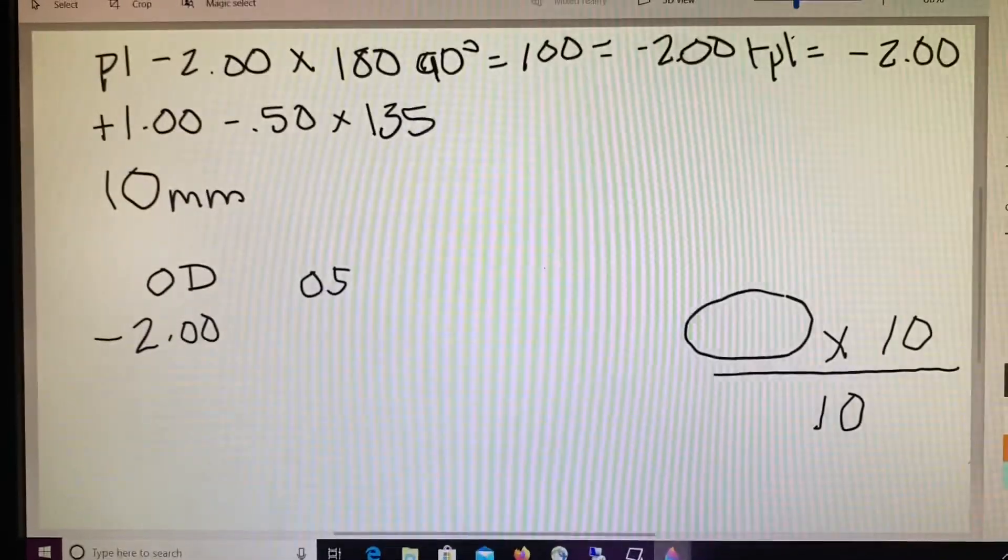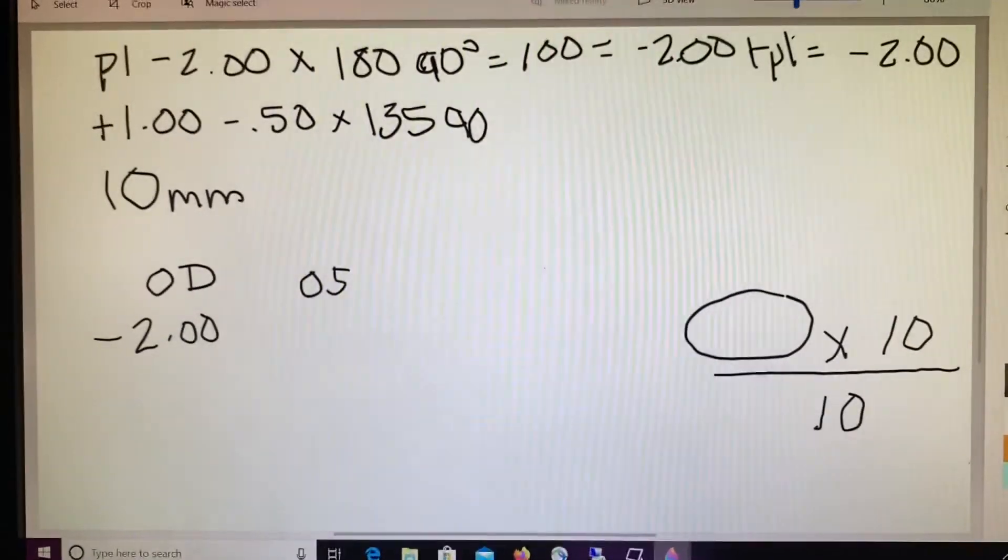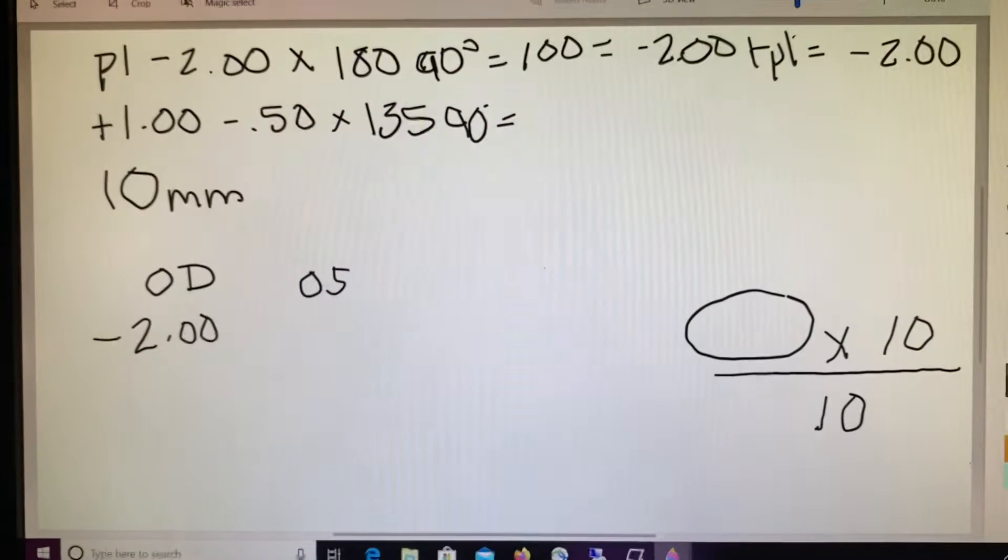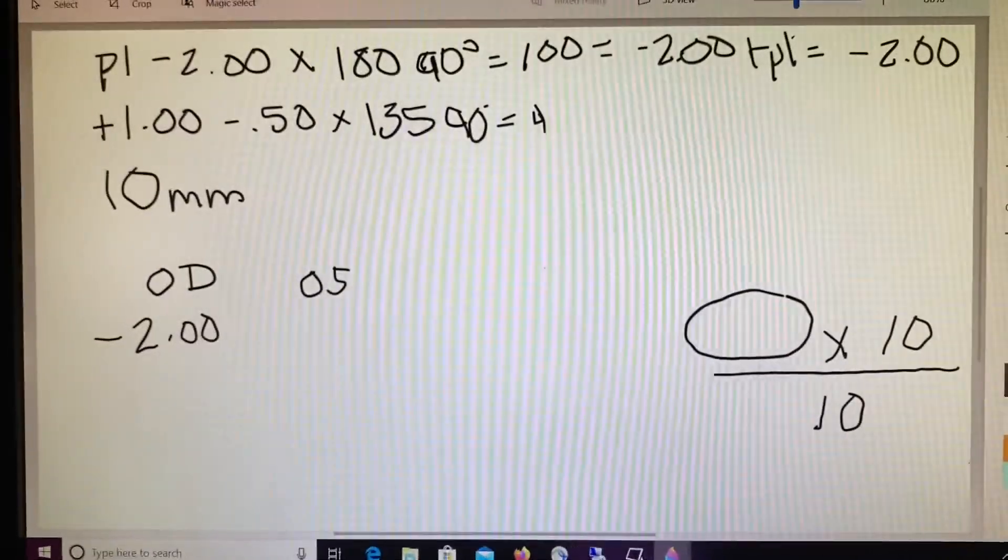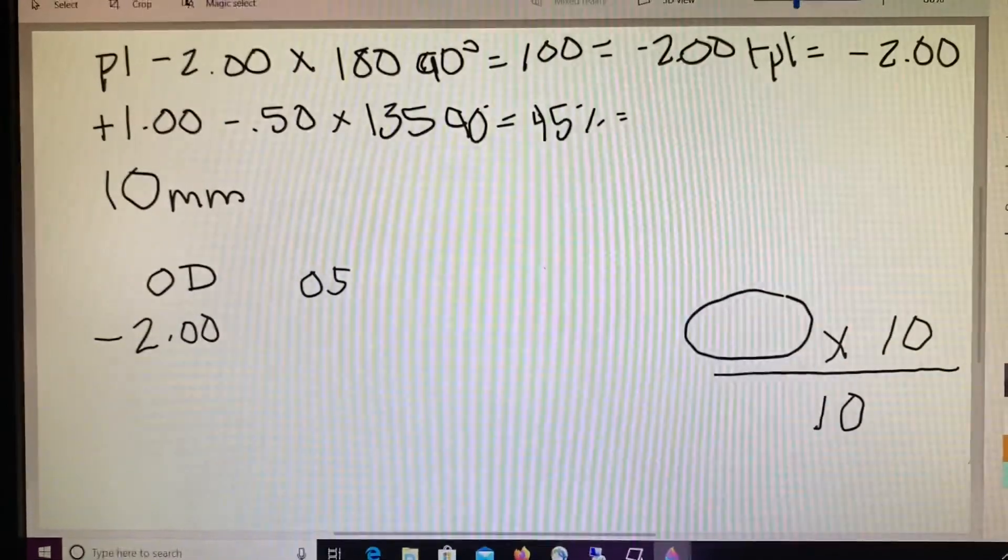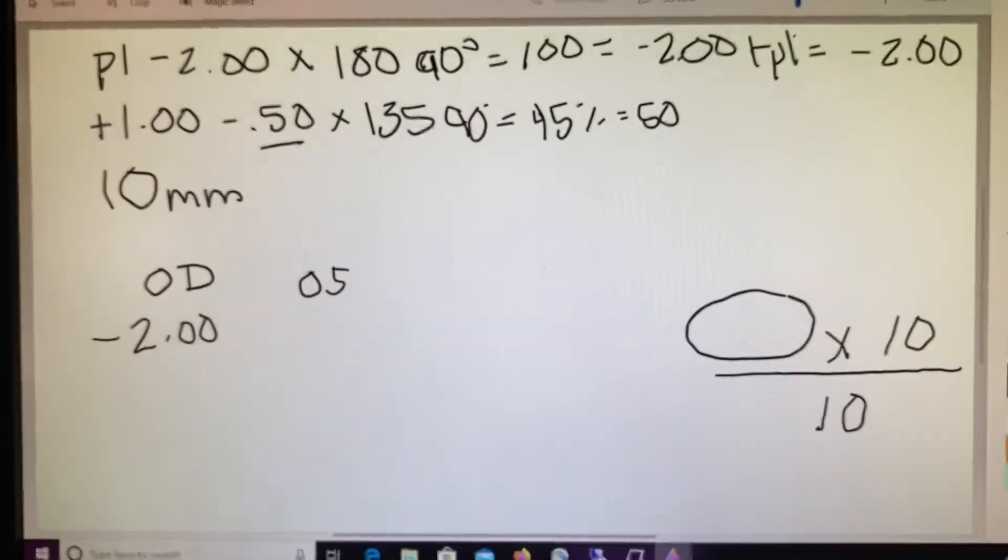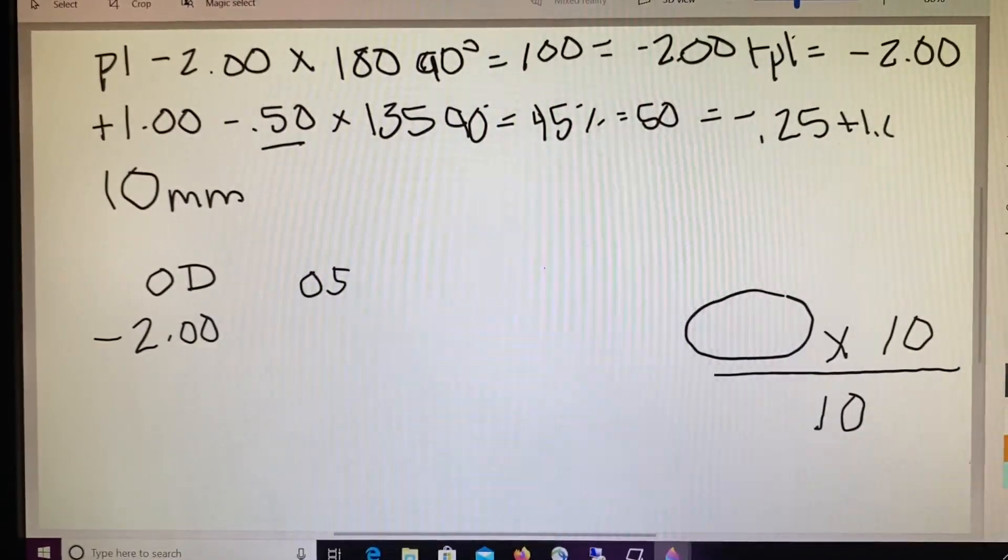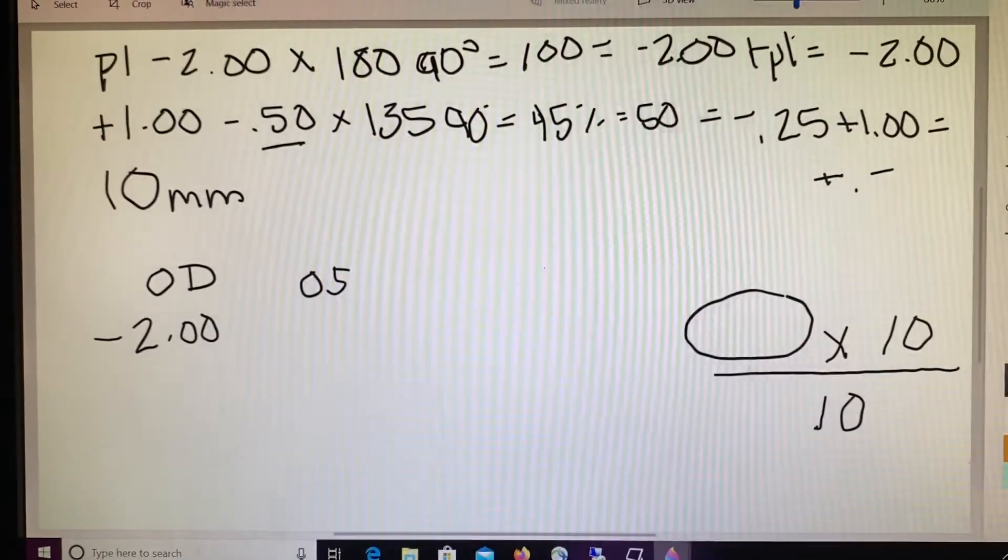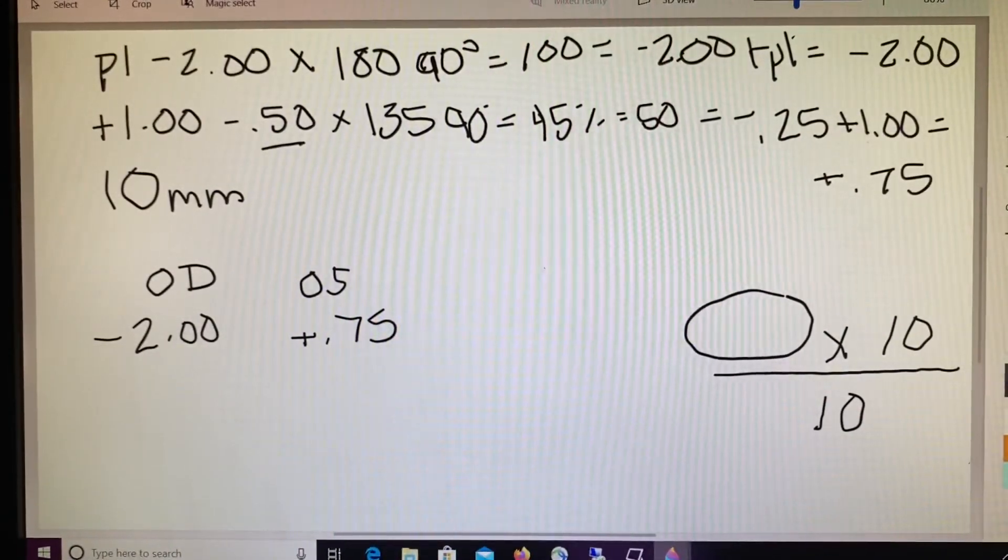Let's work on the left side. So on the left side, we're currently sitting at 135. We need to know what our power is at 90. When we do the math here, we are 45 degrees away. So 45 degrees away equals that 50%. 50% of our cylinder of a minus half equals a minus a quarter. Combined with our plus 1 and we end up with a plus 75. So our patient is a plus 0.75 at 90 on the left side.